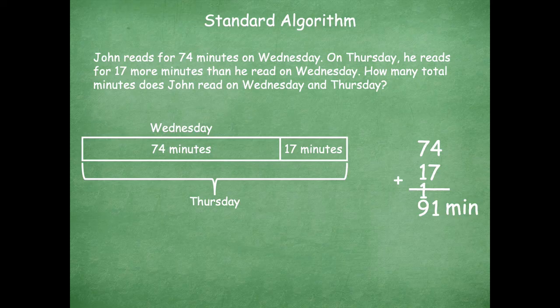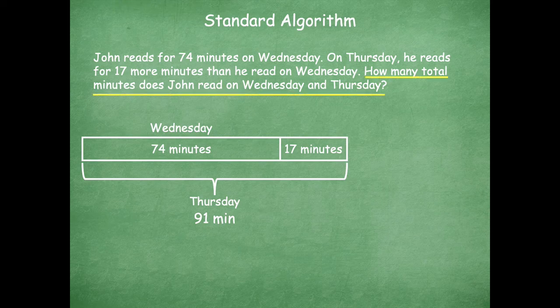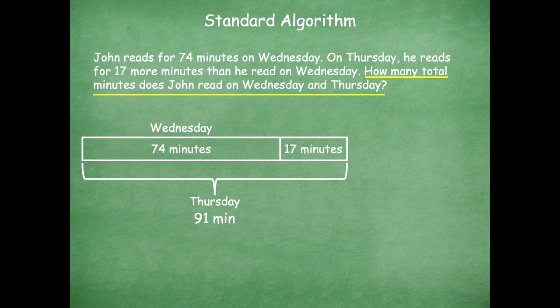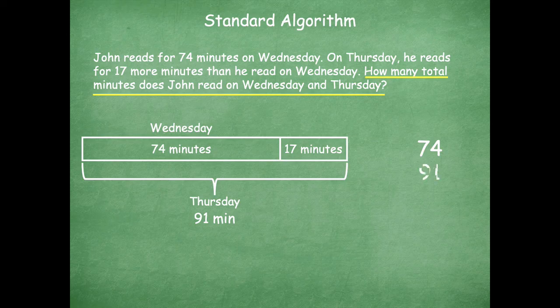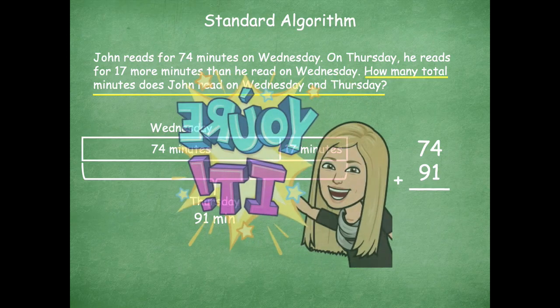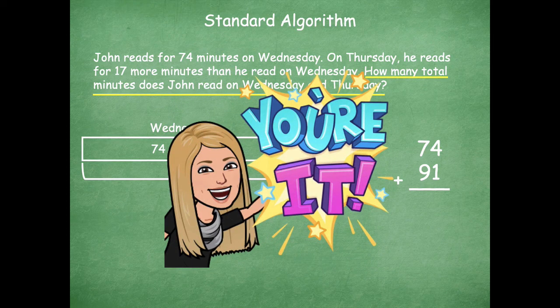Alright, so let's jump back over to our tape diagram. So now on Thursday, we know that he read 91 minutes. So if we go back to our problem, it's asking how many total minutes did John read on Wednesday and Thursday? So now I know how many he read on Wednesday, which is 74, and on Thursday, I know that he read 91. So I'm going to add those together and tag you're it again. Go ahead and solve 74 plus 91, and then click play when you're ready to go over it together.